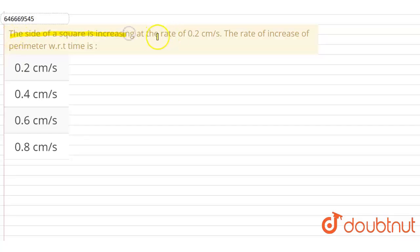Hello students, our question is: the size of a square is increasing at the rate of 0.2 centimeter per second. Then the rate of increase of perimeter with respect to time is? So simply in this question, we have to find the rate of increase in perimeter of a square when side of a square is increasing at the rate of 0.2 centimeter per second.